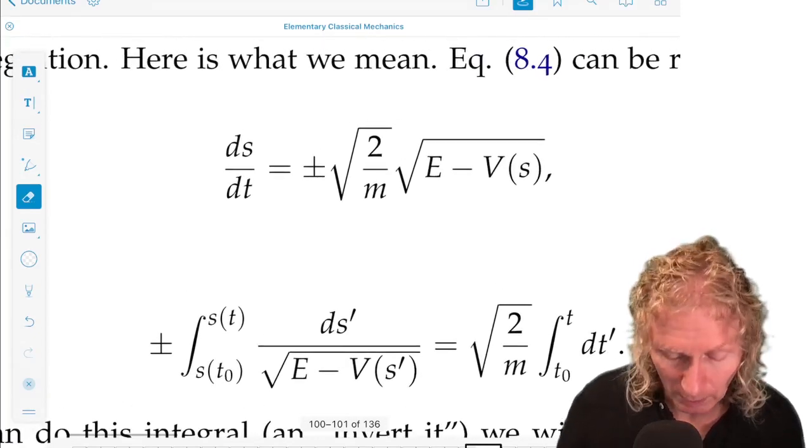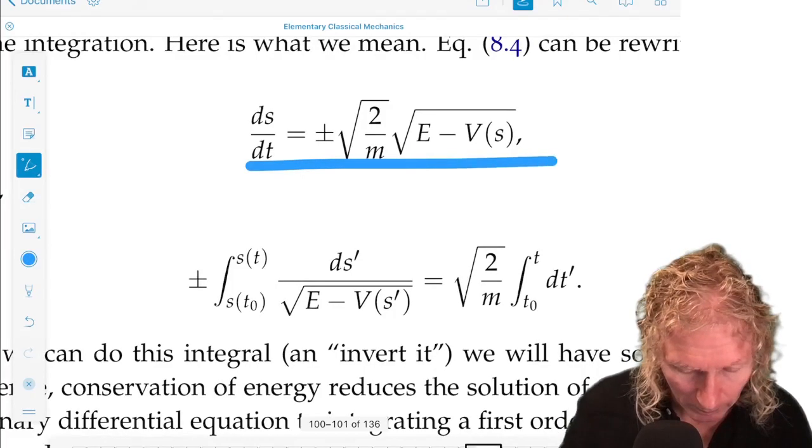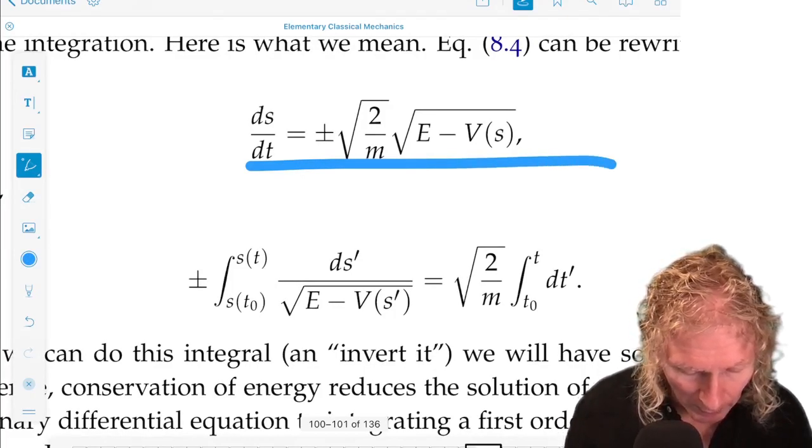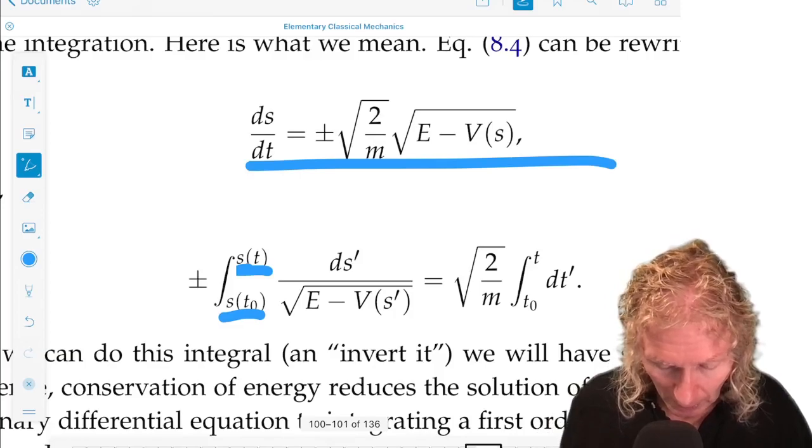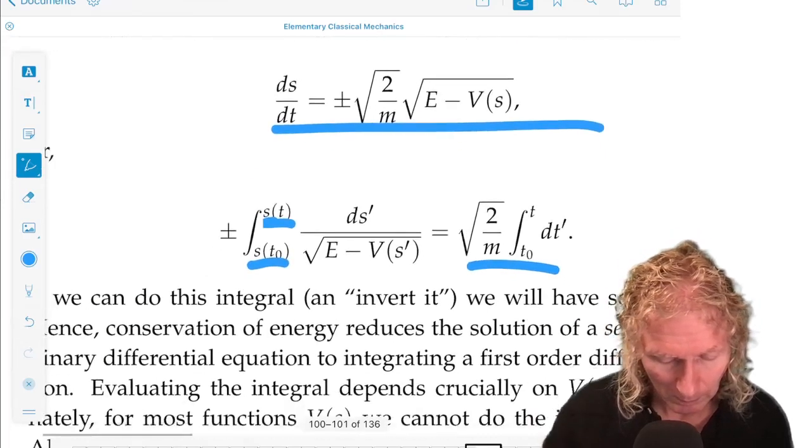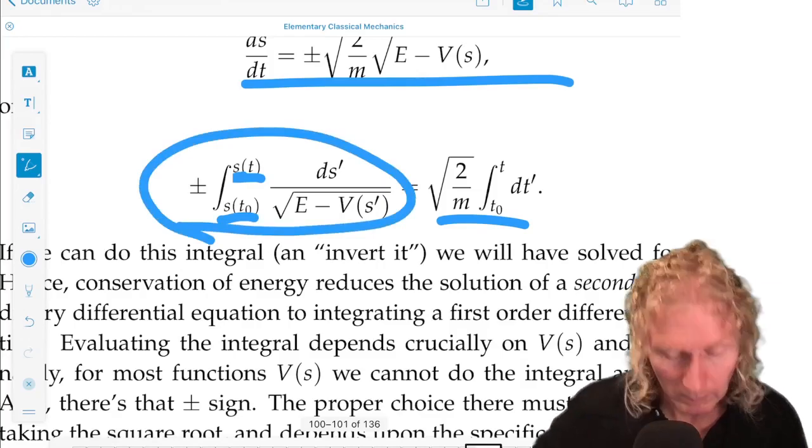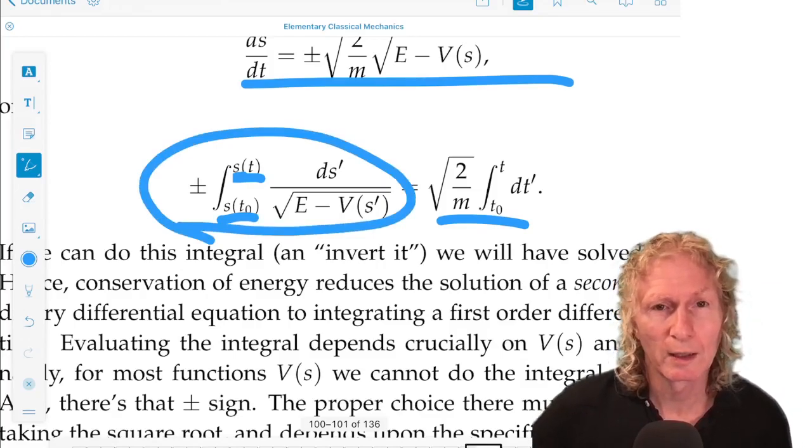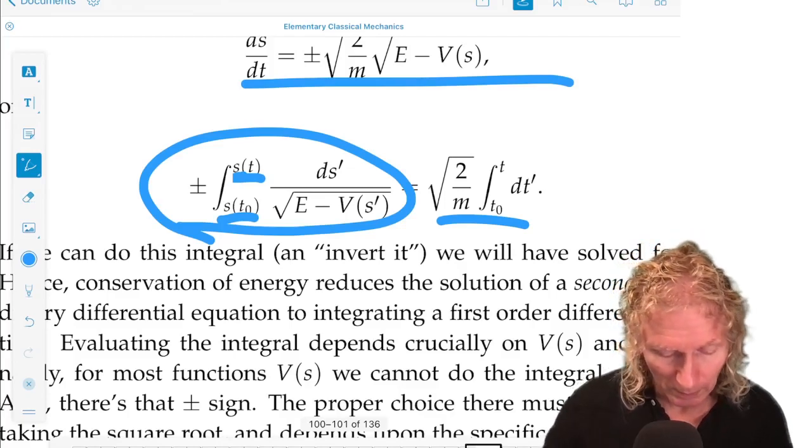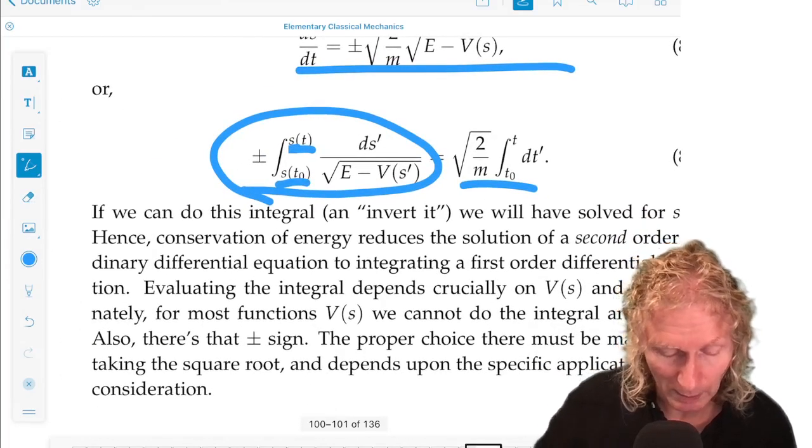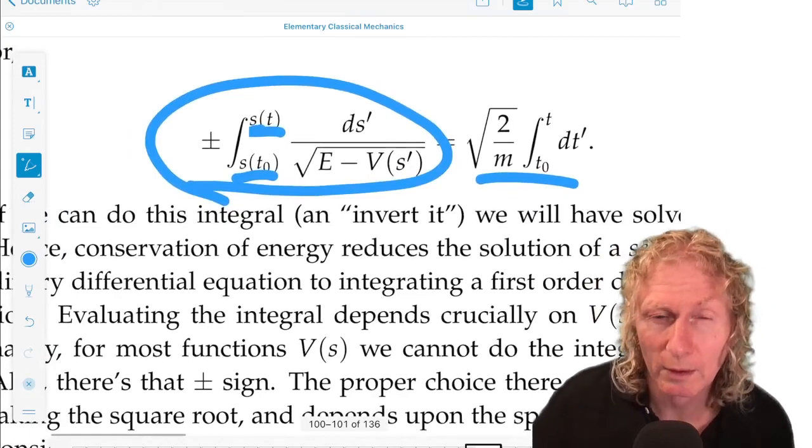We could integrate this from the initial position to some arbitrary position s of t, which is the solution, and the t integral is here. So if we could do this integral on the left-hand side, the integral on the right-hand side is trivial. Then somehow, if we could solve for s of t alone, we could manipulate this, invert it in some way, and get the solution.